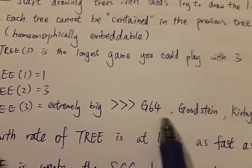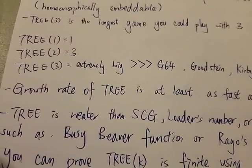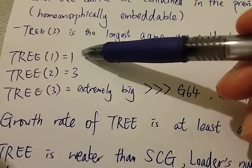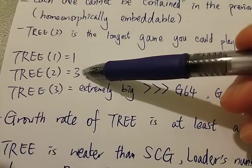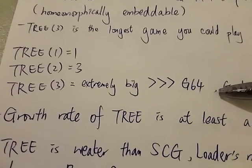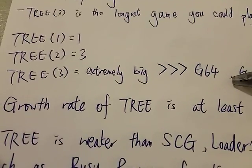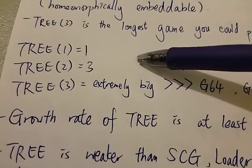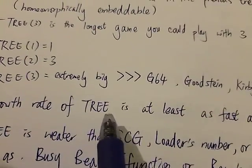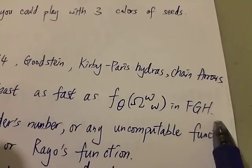Again it's way bigger than these numbers. Actually it's kind of hard to believe. Basically you start with 1 to 3 to something way bigger than Graham's number. This is very crazy. There's nothing in the physical world or the universe that is anything similar to this. The growth rate of the tree sequence is at least as fast as this thing in the fast-growing hierarchy.